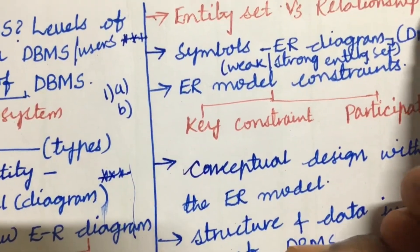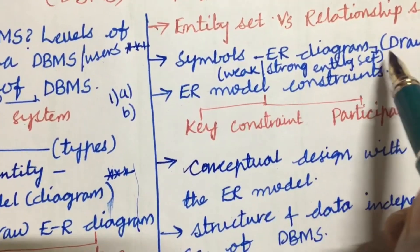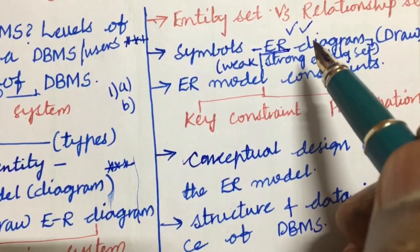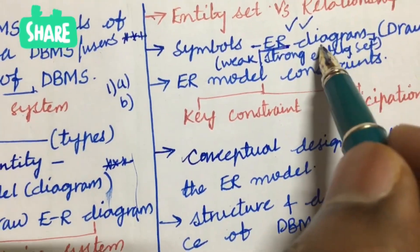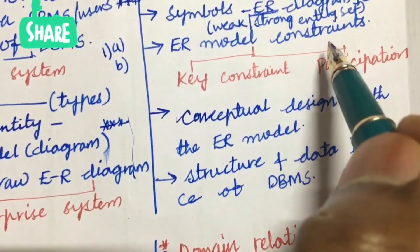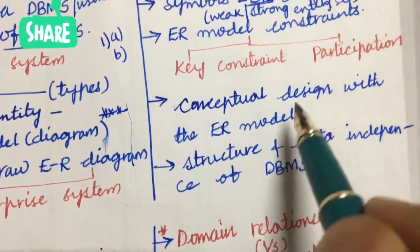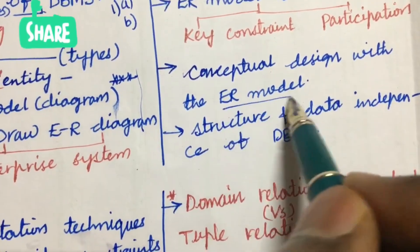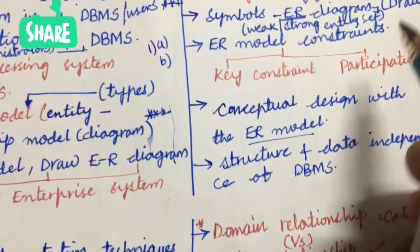Entity set versus relationship set, the differences, and the symbols of ER diagram. ER diagram related, you're going to get one question for sure, that is a gunshot question. Weak as well as strong entity set, ER diagram and the ER model constraints, key as well as participation constraints, and the conceptual design with ER model. Either the ER model or the diagram is very important and the structure and data independence of DBMS.